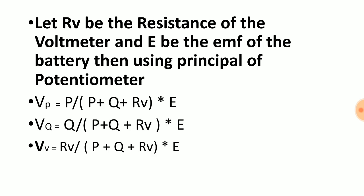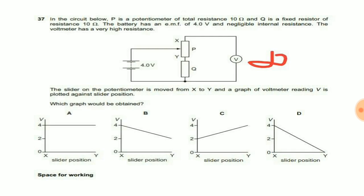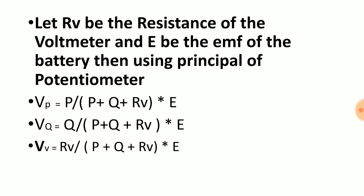If we need to find the voltage of Q, again we will be using this formula. Voltage across Q is equal to resistance of Q divided by resistance of P, resistance of Q, plus resistance of V, the sum of these three resistances times emf of battery.